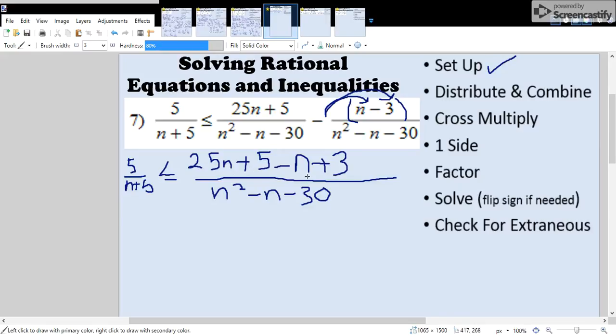25n minus 1n is 24n, and 5 plus 3 is 8. So when you rewrite it out, you should get this. And now we're done with step 2.